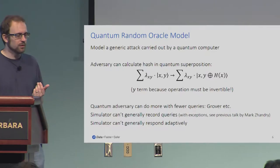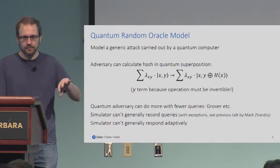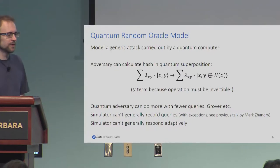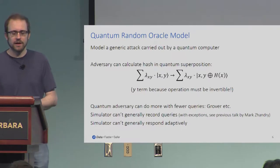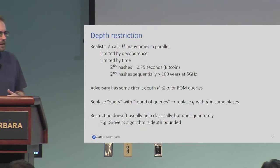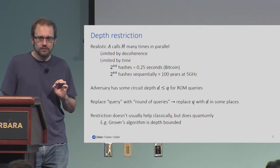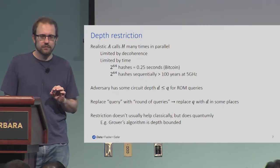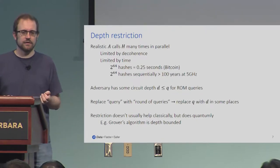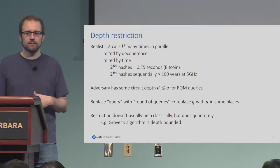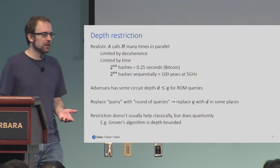It's also very difficult to record queries to oracles. If the oracle is a uniformly random quantum oracle, the previous talk says you can sort of record the queries approximately with a little bit of loss in recovering them. The simulator can in some cases respond adaptively, but again there are a lot of caveats on that. We're going to show a technique that can recover some semblance of tightness in proofs without necessarily getting into the analysis required to figure out quantum recording of queries or to analyze too much into the quantum states.